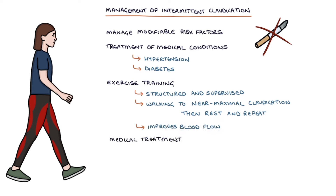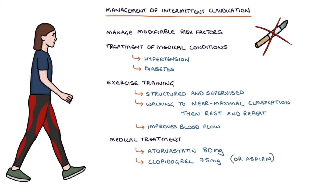Medical treatments include atorvastatin 80 mg, clopidogrel 75 mg once a day — with aspirin used if clopidogrel is unsuitable — and a medication called naftidrofuryl oxalate, which is a 5-HT2 receptor antagonist that acts as a peripheral vasodilator, improving blood flow to the peripheral tissues.